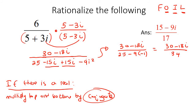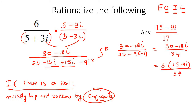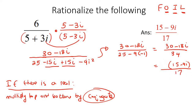So that's going to become 30 take away 18i over 25 plus 9, which is 34. Now we just need to do some simplifying. The number 2 can go into both of those, so taking it out as a common factor, you'd be left with 15 take away 9i over 34. Then 2 goes into the numerator once and into 34 seventeen times, and so that is our final answer.